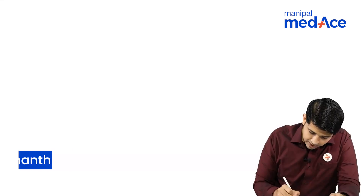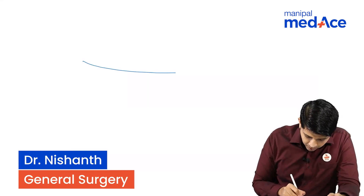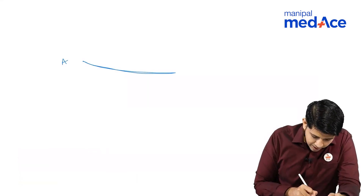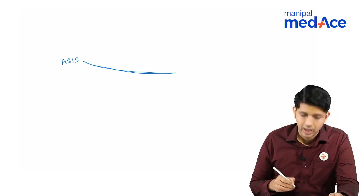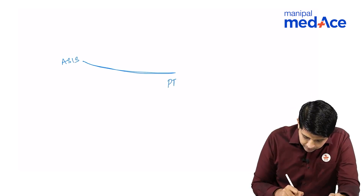Let us draw your inguinal ligament. The inguinal ligament extends from the anterior superior iliac spine all the way to the pubic tubercle — this particular point.